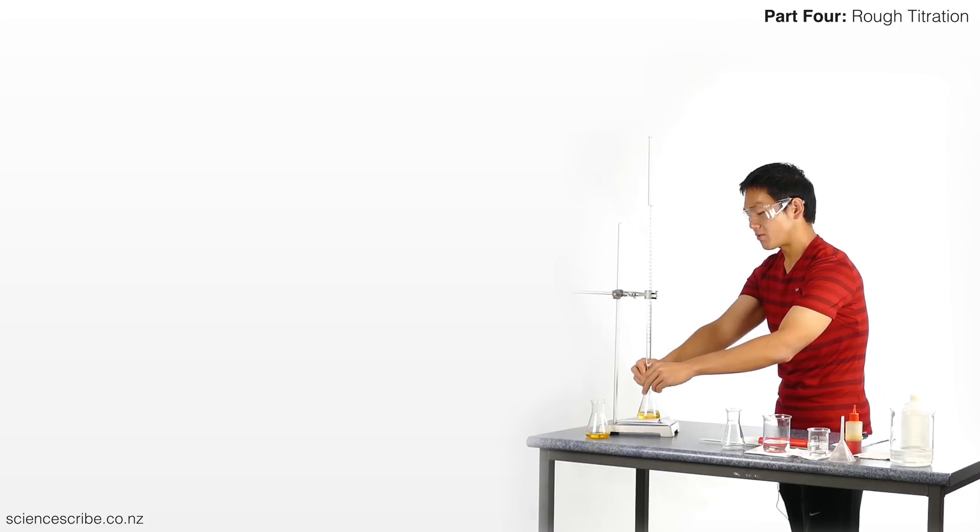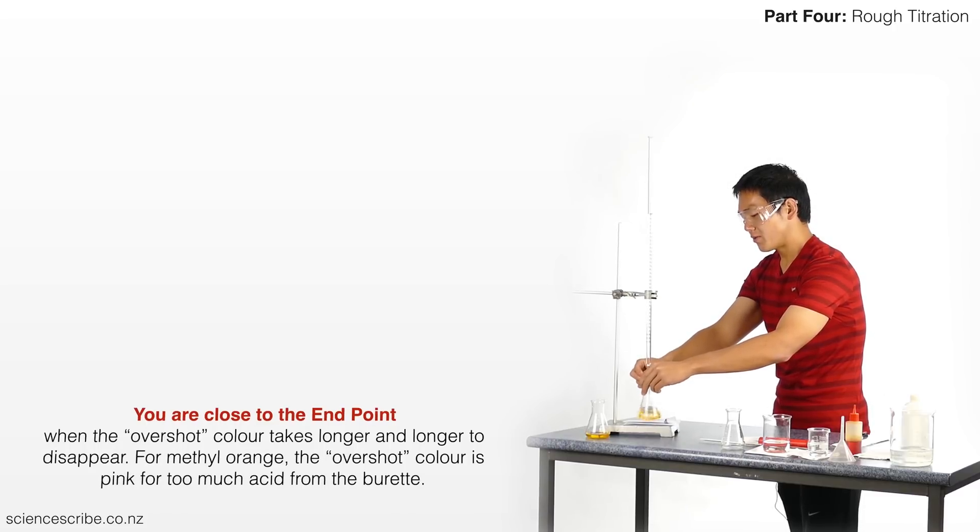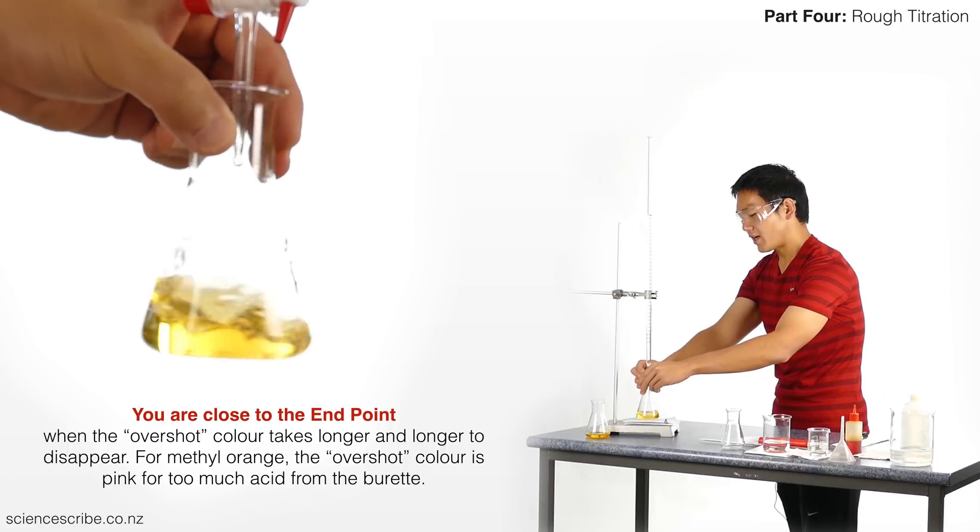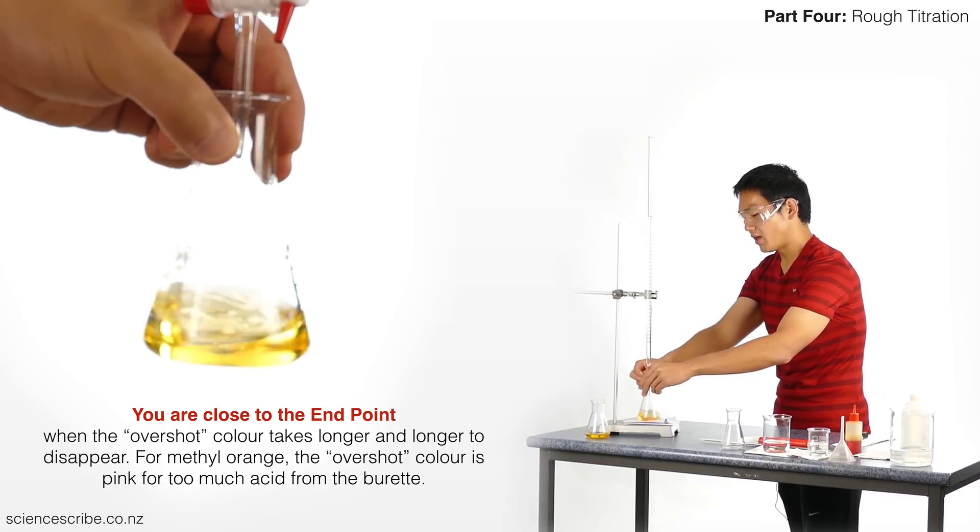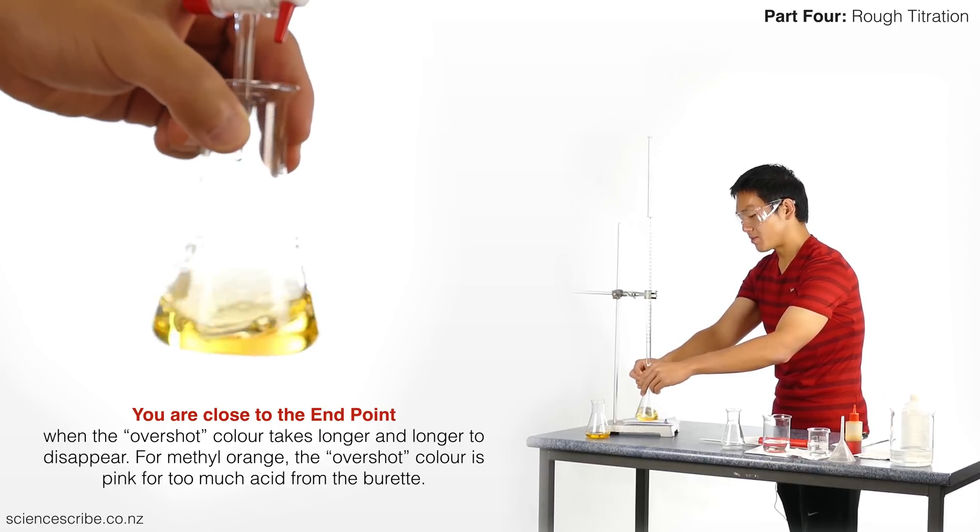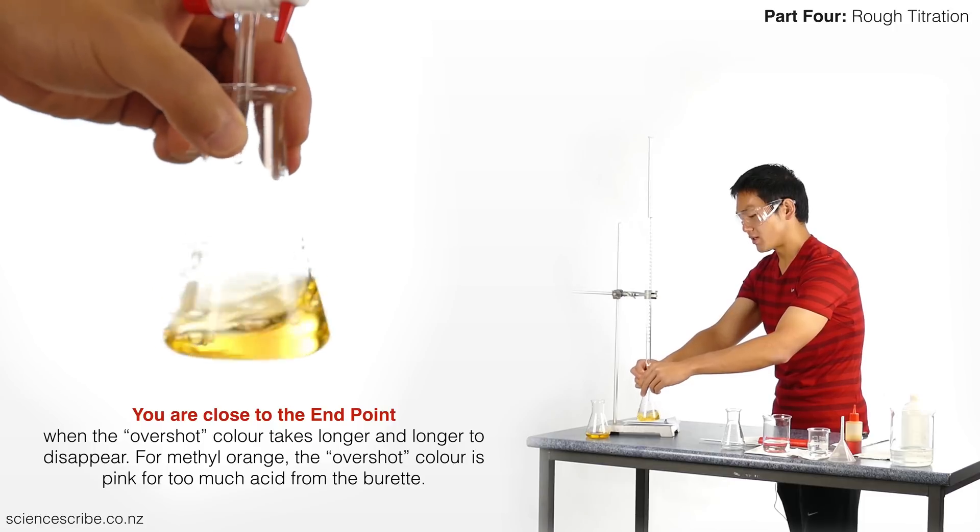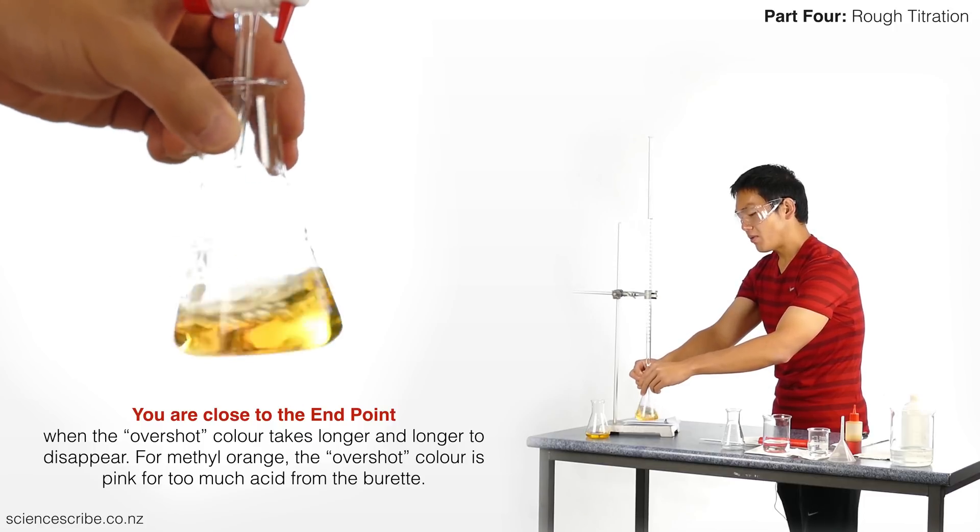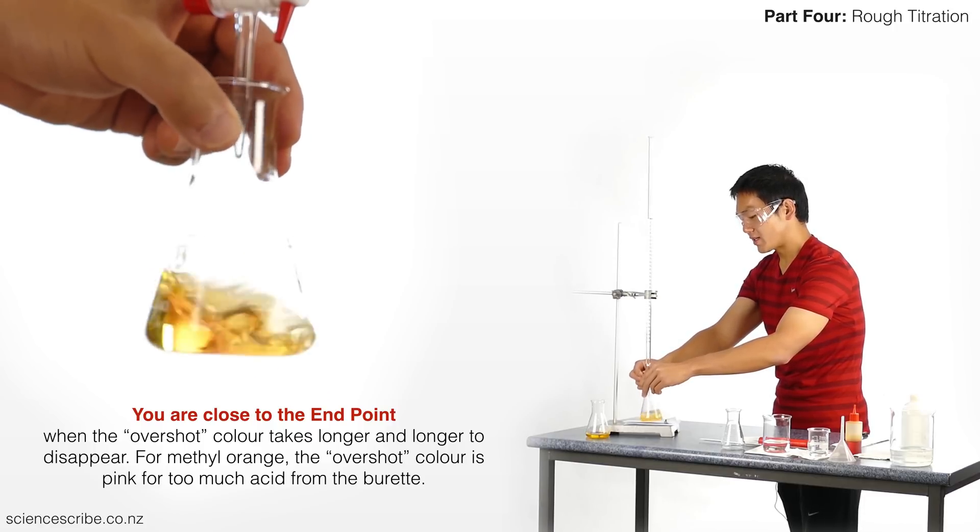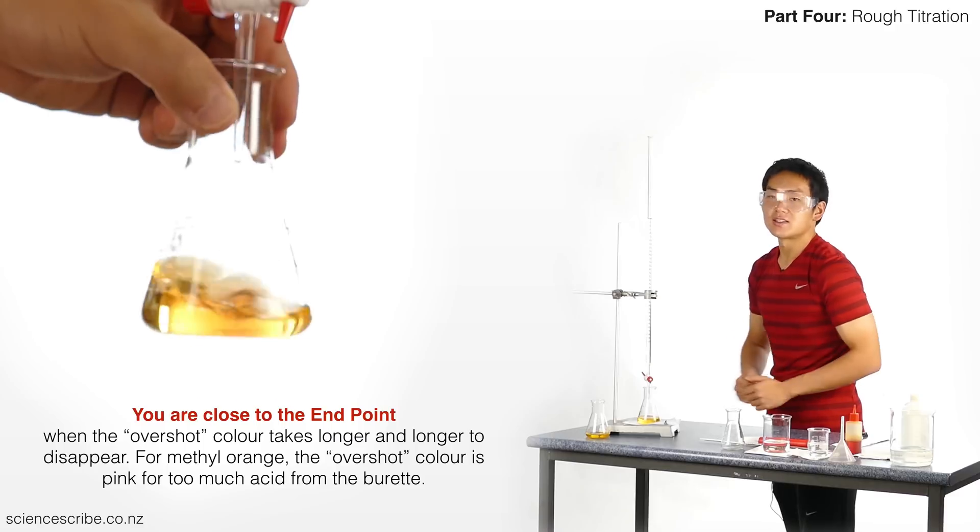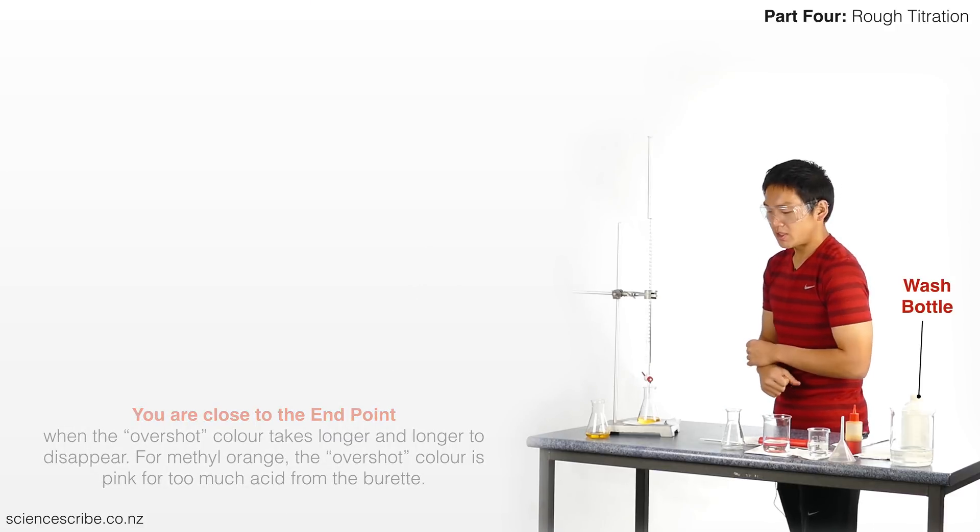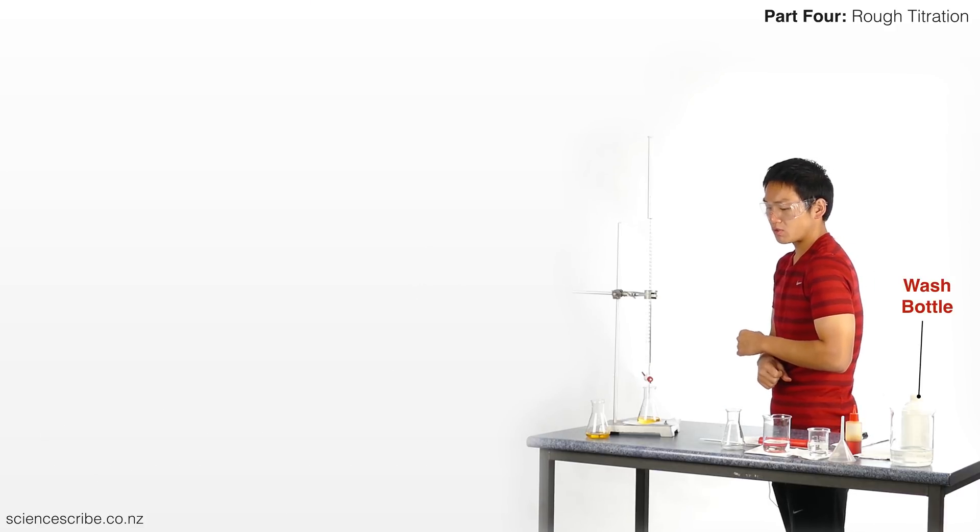Because later on, you're going to have to squeeze out single drops. So I'm adding liquid in squirts at a time. You can see that the color change where I've gone too far is pink, because pink is when my flask is going to be too acidic. Now I'll know when I'm close when that pink color takes longer and longer to disappear. So that last swirl actually took a lot longer than my initial swirl.